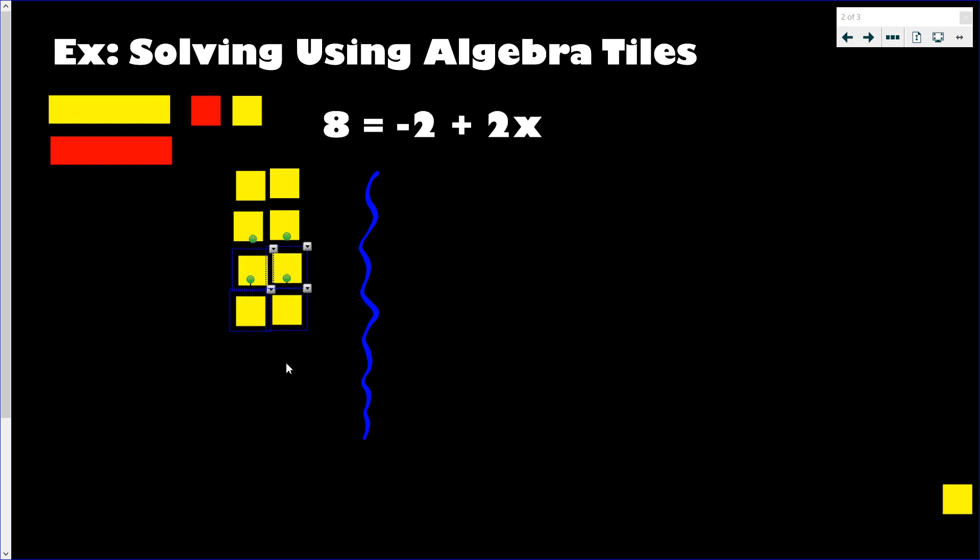So I have eight of these one tiles. Now I have negative two here, so what I need to do is add two of these little red tiles. Now I'm on the other side of the equation and I have plus 2x, so I'll take this tile and then this tile. So basically my goal is, guys, is to have such that I only have x tiles on this right hand side.